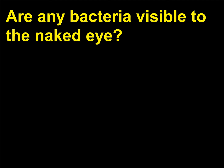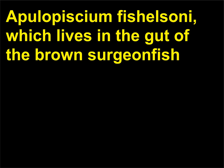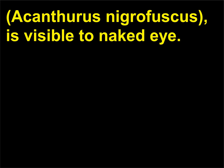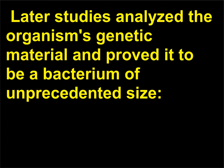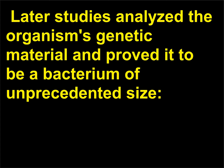Are any bacteria visible to the naked eye? Epulopiscium fishelsoni, which lives in the gut of the brown surgeonfish, Acanthurus nigrofuscus, is visible to the naked eye. It was first identified in 1985 and mistakenly classified as a protozoan. Later studies analyzed the organism's genetic material and proved it to be a bacterium of unprecedented size — 0.38 millimeters in diameter, or about the size of a period in a small print book.